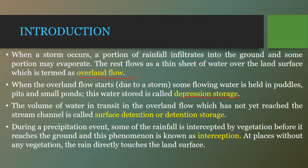When overland flow starts, some flowing water is held in puddles, pits, and small ponds — that stored water is known as depression storage. The volume of water in transit in the overland flow which has not yet reached the stream channel is called surface detention. If the rain continues further, water starts infiltrating to the water table, and if the rate of rainfall exceeds the infiltration rate, then excess water starts collecting on the surface — that is known as surface detention.